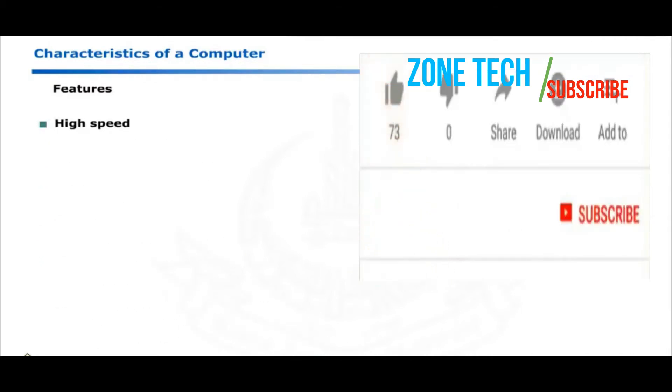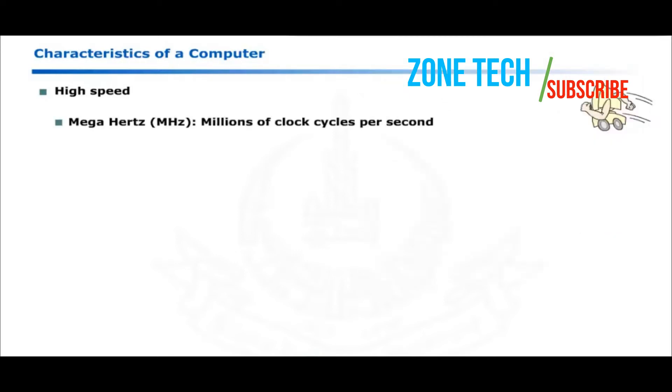First feature of computer is its speed. The speed of personal computer is measured in terms of megahertz, that is millions of clock cycles generated by microprocessor clock in one second. Most modern microcomputers are rated from 300 megahertz to 2 gigahertz.